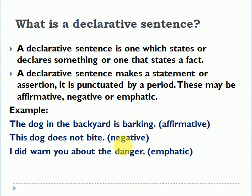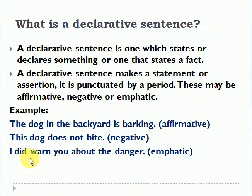'The dog does not bite' is a negative sentence. 'I did warn you about the danger' is an emphatic sentence, because the stress is on certain words. Further examples: 'She is present today', 'He likes to eat ice cream' (affirmative), 'She does not like to eat ice cream' (negative). An emphatic sentence is used when you stress or emphasize something forcefully, such as 'No, he did come yesterday.'